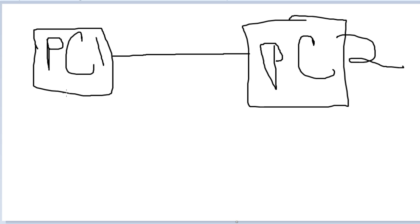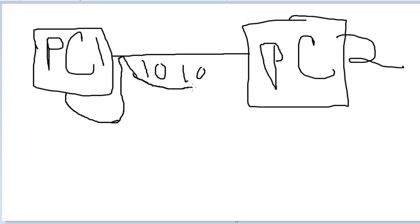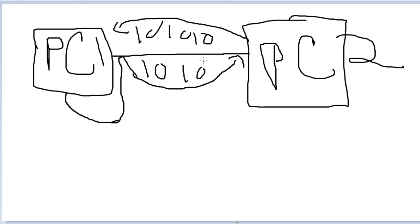We're going to pretend we're sending a ping — this is basically the Physical layer in action. When PC one sends a ping, it goes from the computer as ones and zeros — because ones and zeros are bits — and those bits are transferred across the Ethernet cable to PC two. PC two receives it and sends a reply back, also as ones and zeros. The Ethernet cable, the interfaces, and the NICs — Network Interface Cards — are all part of the Physical layer. Every computer must have a NIC to communicate on the network.